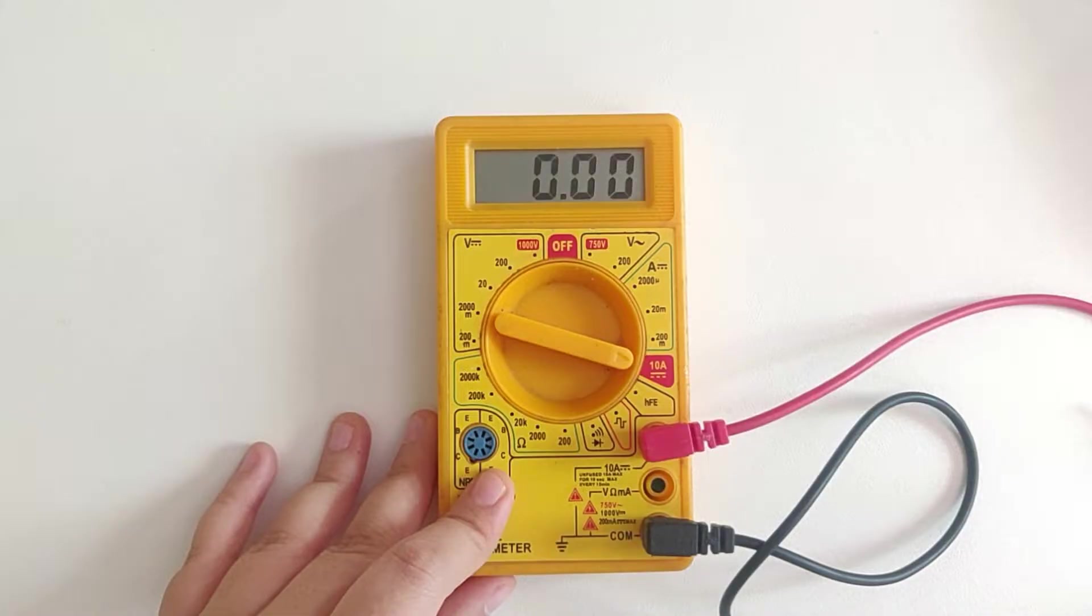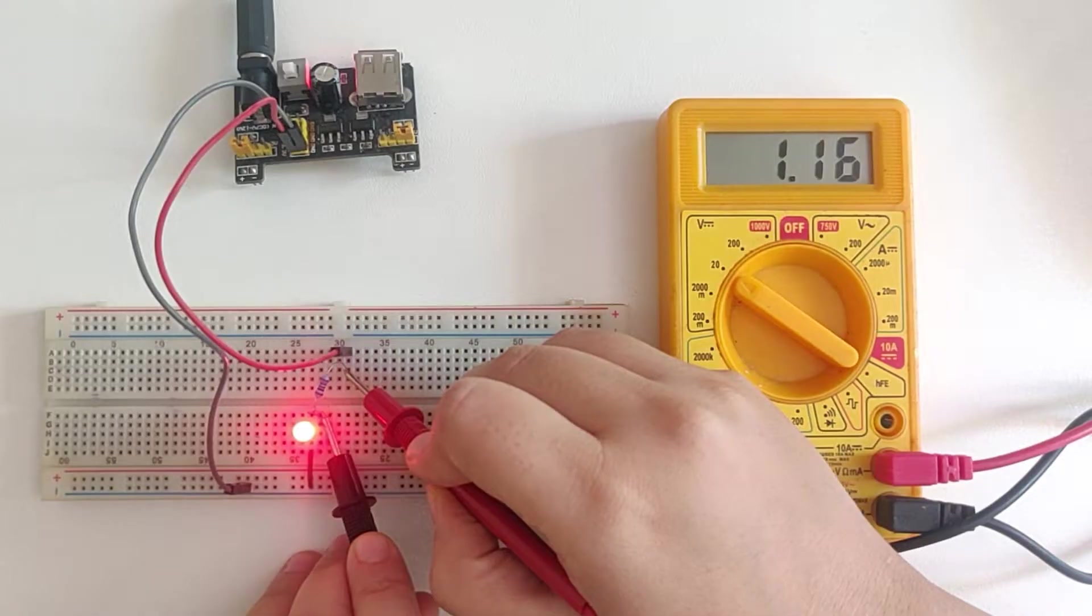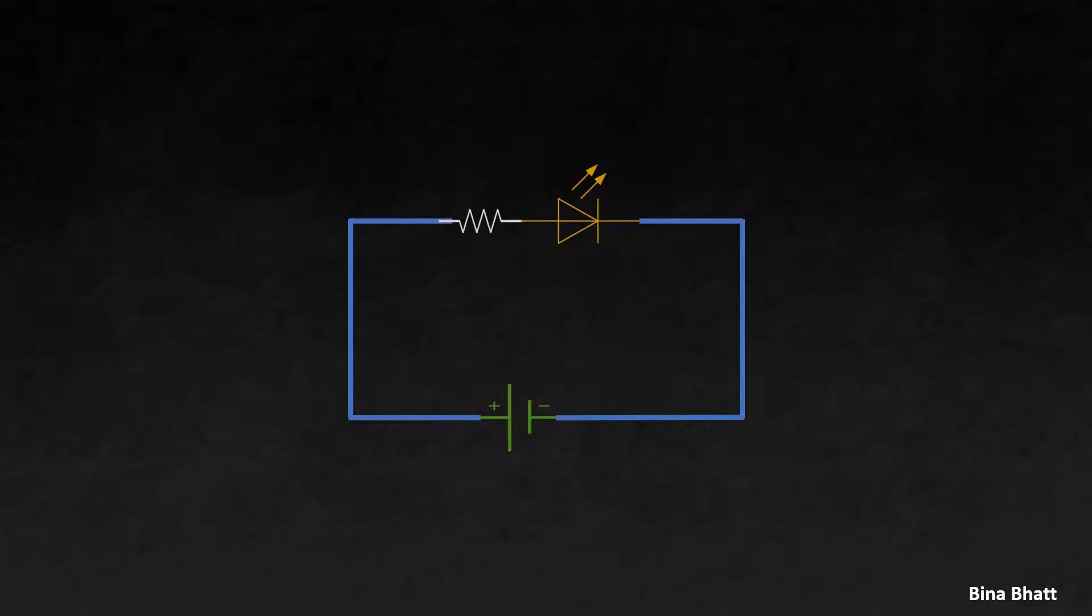Next, let's understand how to use the multimeter to actually measure the current in a circuit. So this is going to be a little tricky. To measure the voltage, you just had to connect the probes across a component. But for current, you need to connect the multimeter in series with the circuit. So for example, let's consider one simple circuit.